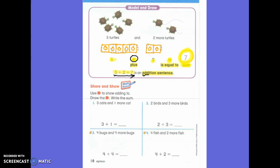First grade, let's go down here to number one. It says, can you read it with me? Three cats and one more cat. Are we going to draw cats? No. What are we going to draw? Cubes. So please draw three cubes. And one more cube.